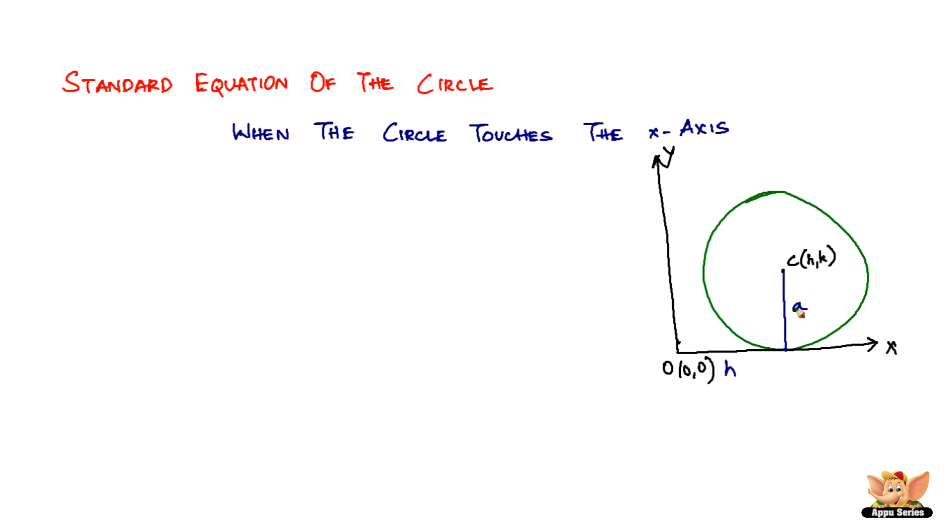but k is also equal to the radius of the circle because this is the moving point. This is one of the moving points. It can be here, here, here, but then this is also supposed to be equal to k. So that becomes a.